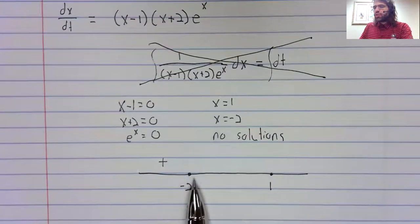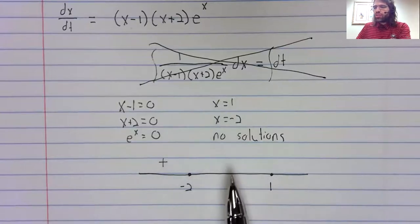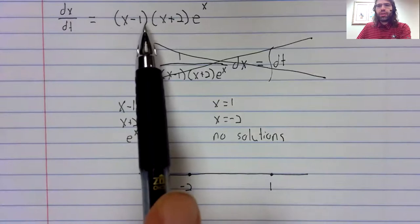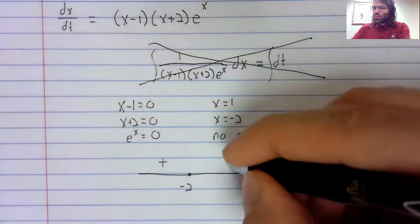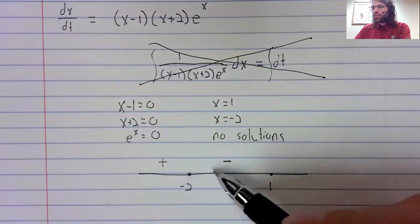And then you just repeat that for this interval between negative two and one. It's either always positive or always negative. Select any number in this interval, say zero. If we plug zero in here, we do get a negative number. So since it's always positive or always negative, and it's negative somewhere, it's negative at zero, it's negative everywhere in this interval.